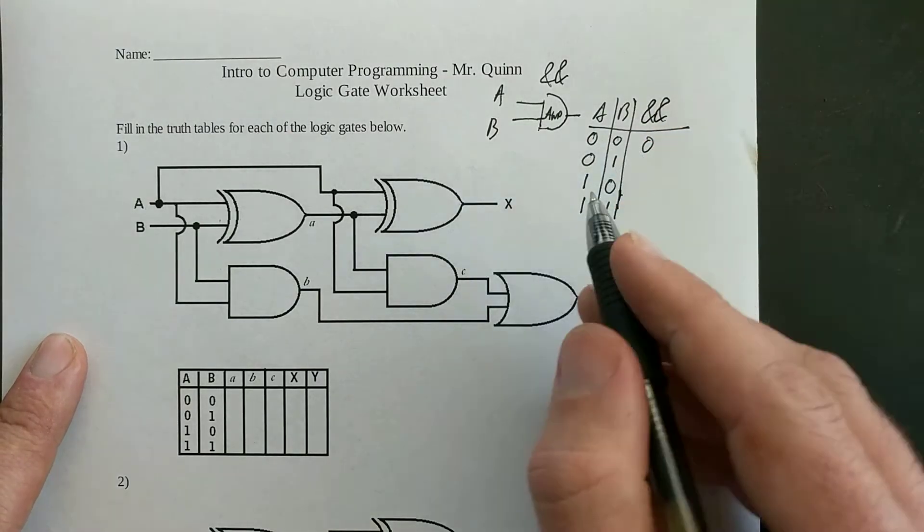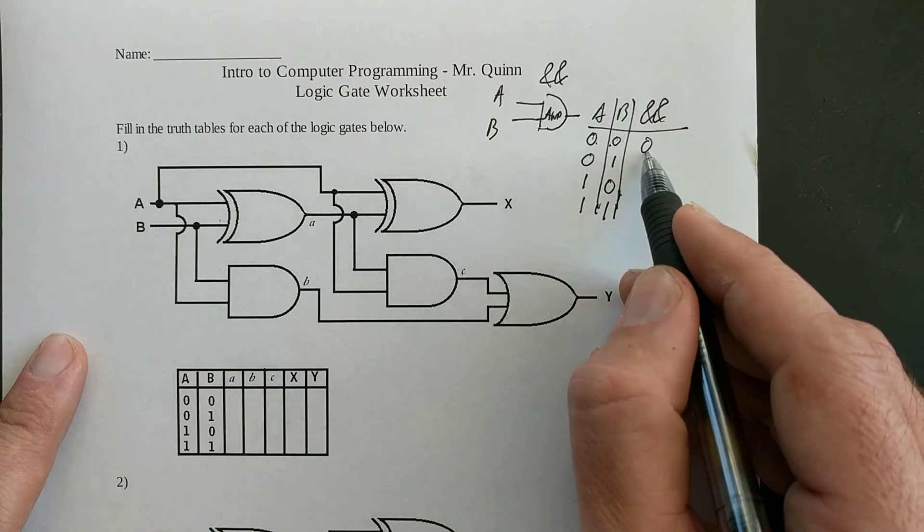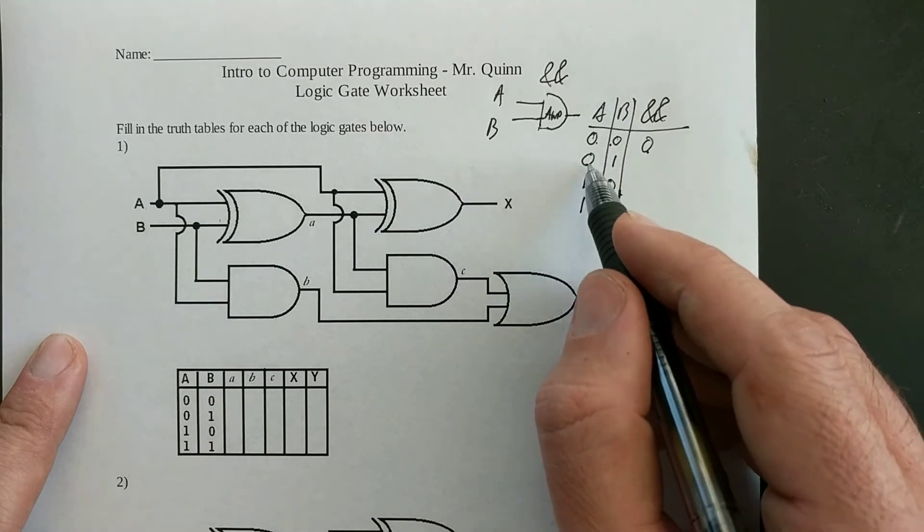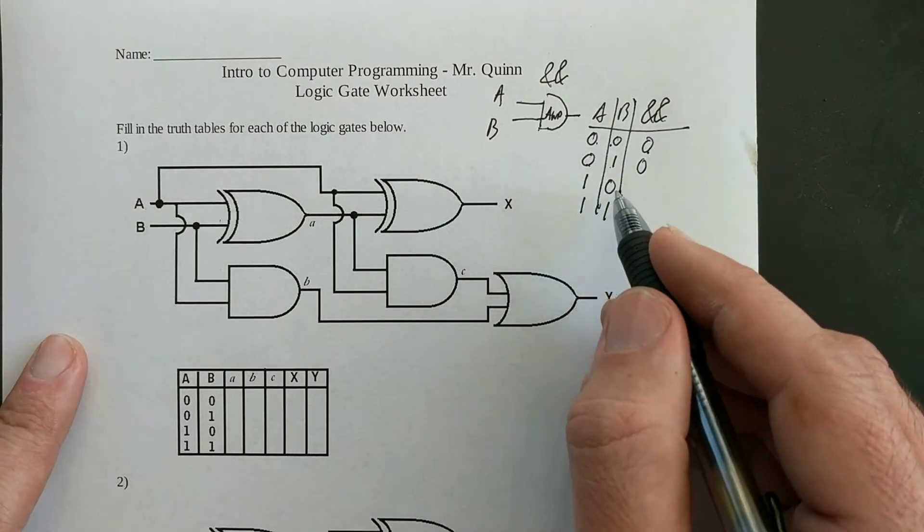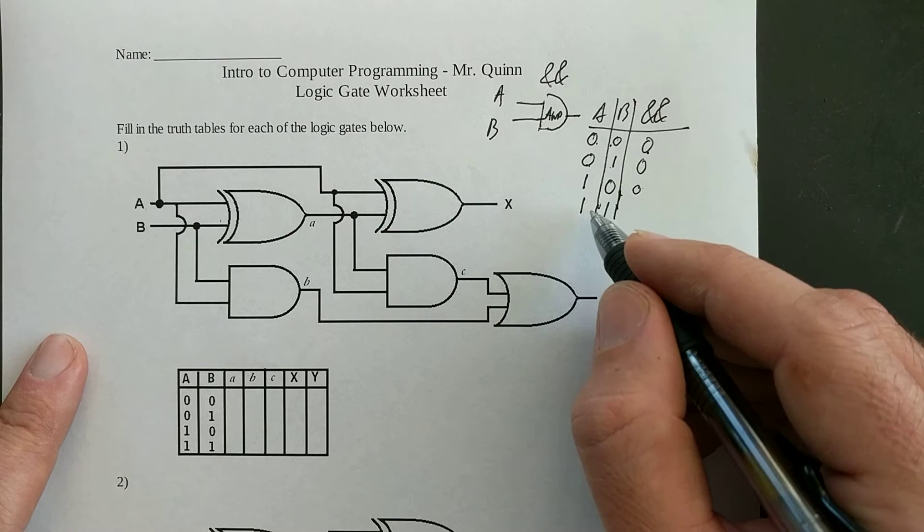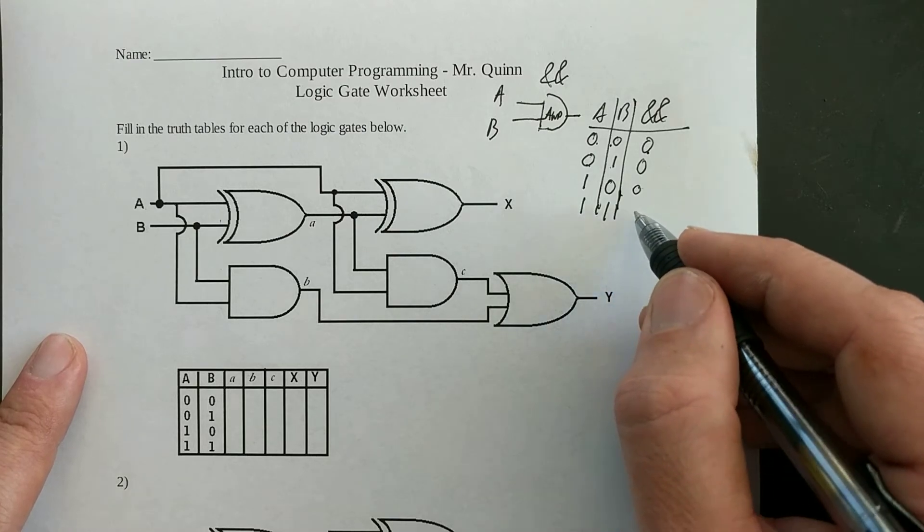So the way this logic gate works, if both things are off, the output is off. If A is off and B is on, the output's off. If A is on and B is off, the output's off. But if A is on AND B is on, an AND gate tells you.